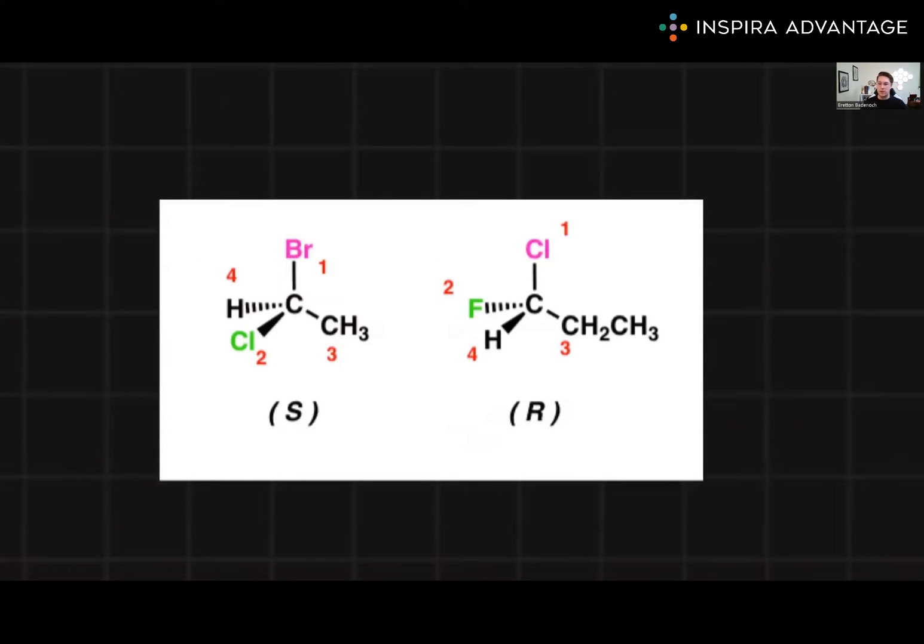Absolute configuration is a system that assigns a unique descriptor to each stereocenter within a molecule. The widely used Cahn-Ingold-Prelog, or CIP, system assigns R and S designations based on a set of rules. To assign R or S configurations, we follow these steps. First, we identify the stereocenter of the molecule. In this case, it's the one in the middle.